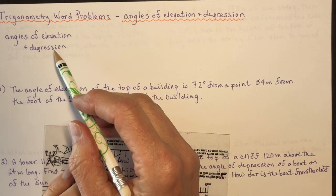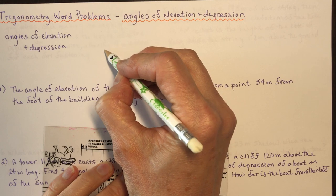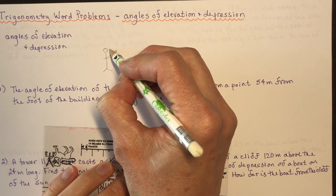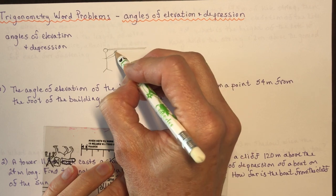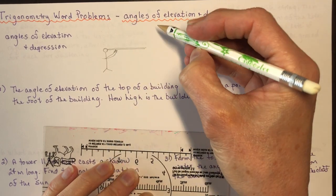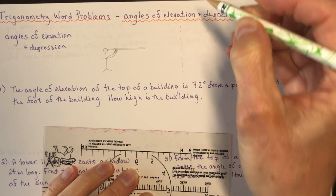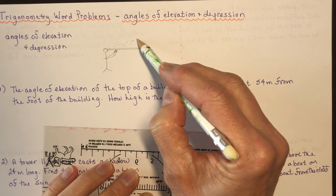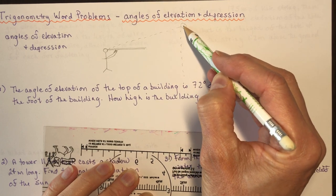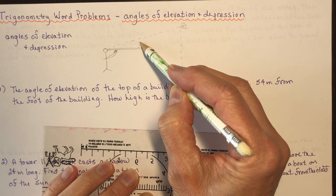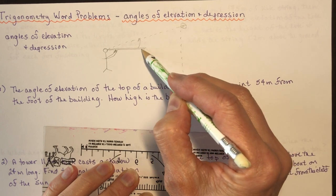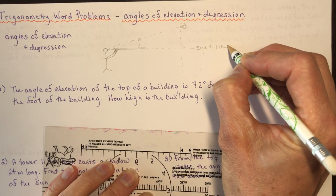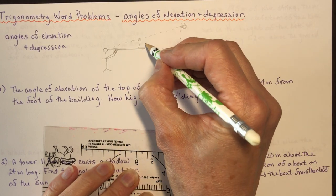Let's talk about what an angle of elevation and depression is first. If you were in my classroom, I would have been standing up at the front holding two rulers on top of each other up to my eye level, then looking at something on the wall. Leaving the bottom ruler as the sight line — where you're looking straight ahead — and measuring upward is an angle of elevation.